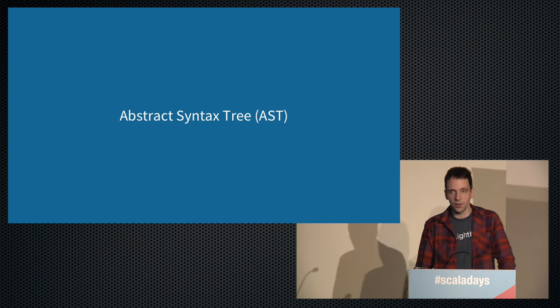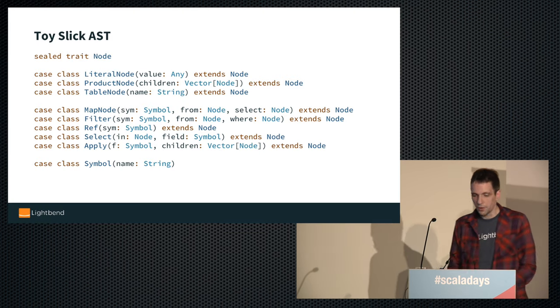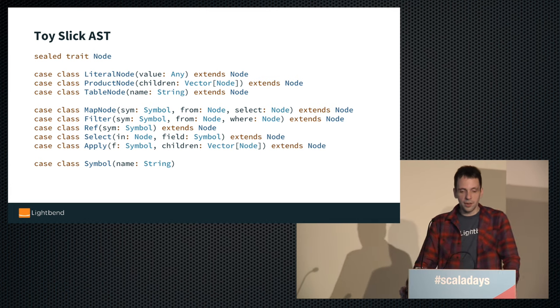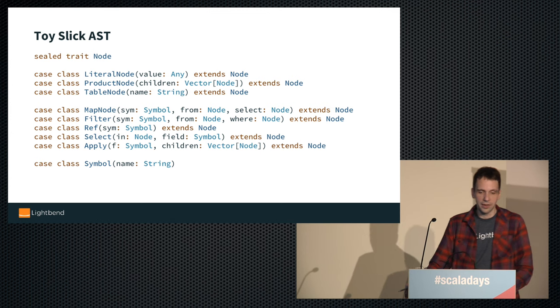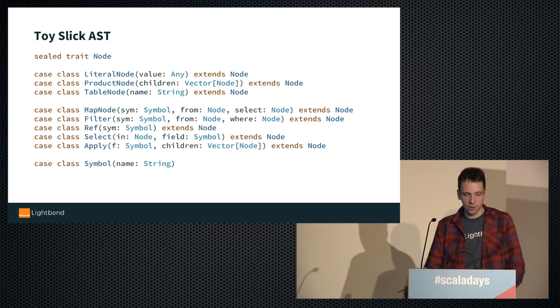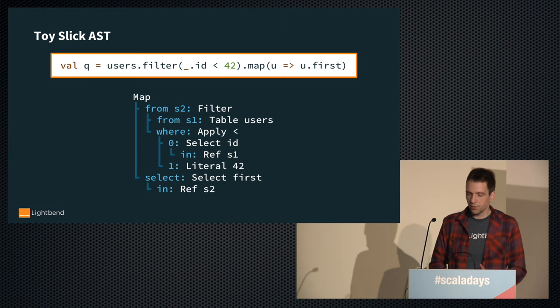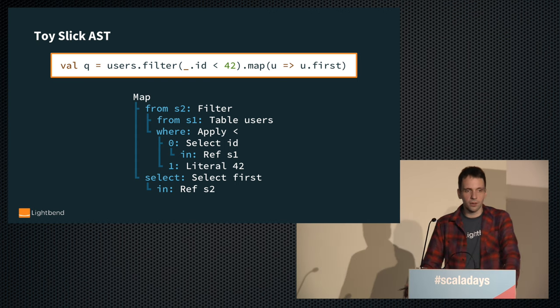Let's start with the AST — the abstract syntax tree. We have a base trait called Node, and a few child nodes: a Literal node containing any literal value or constant, a Product node representing a tuple constructor, a Table node representing a table, and Map and Filter operations. Ref refers to a variable, Select selects a field inside a path, and Apply applies a function.